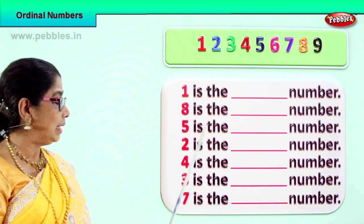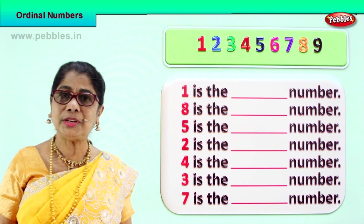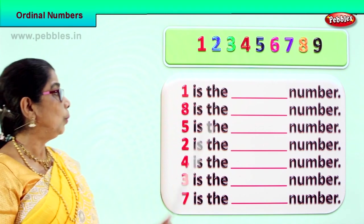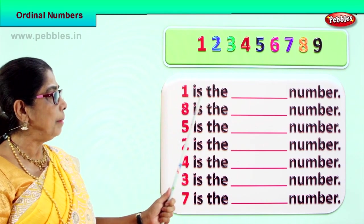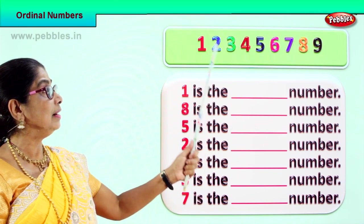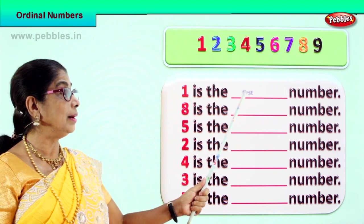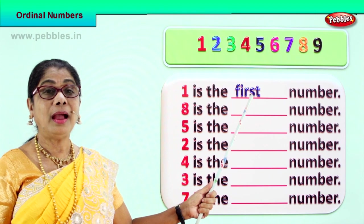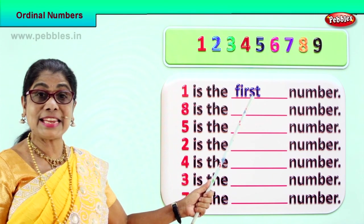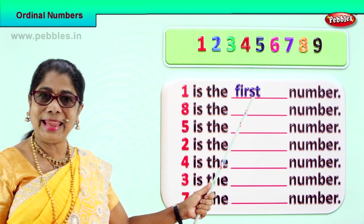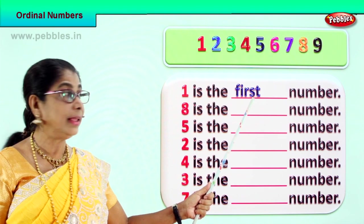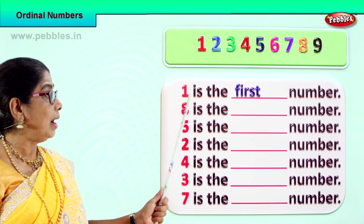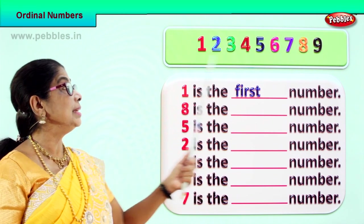Now we are going to see in what position — what is the ordinal position of each of these numbers? We have number one. Number one is the first number. How do you spell first? F-I-R-S-T, first. Number one is the first number.